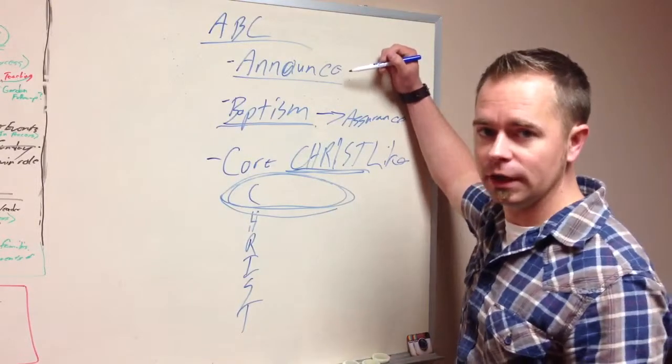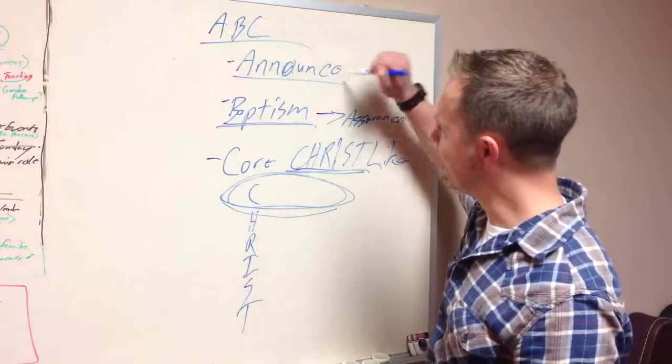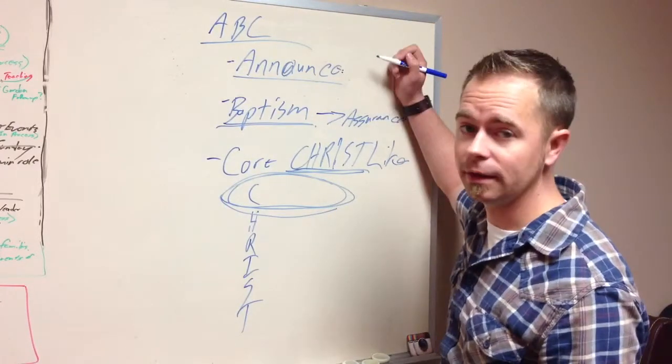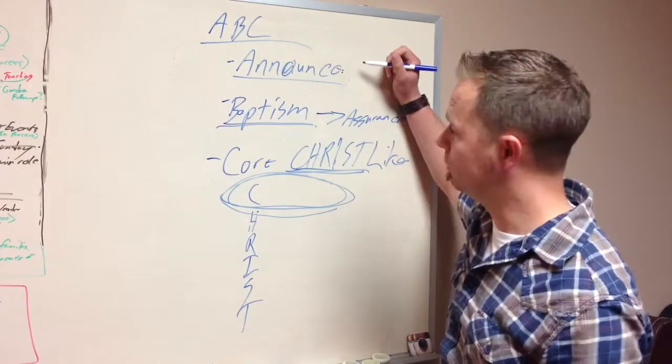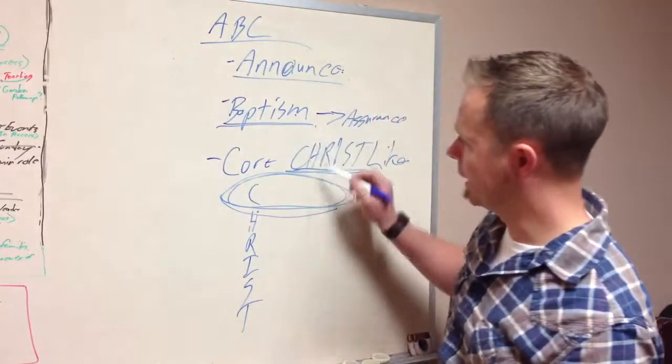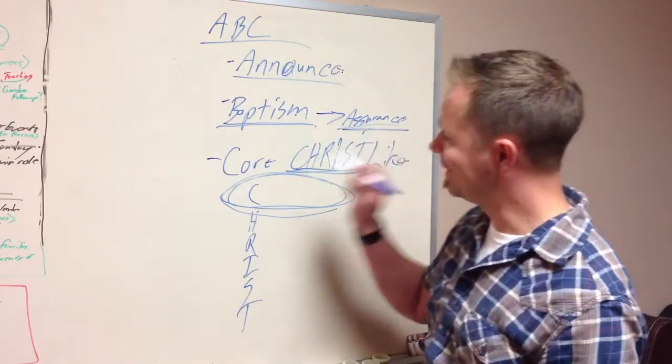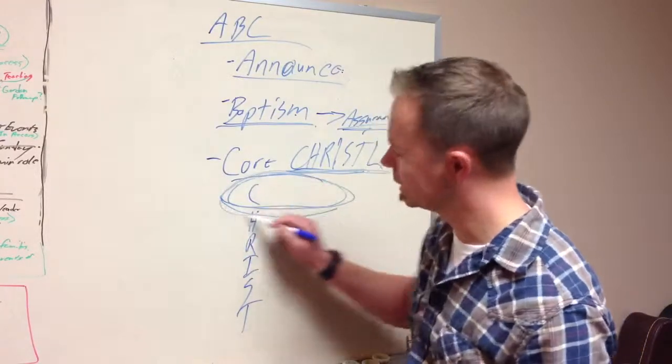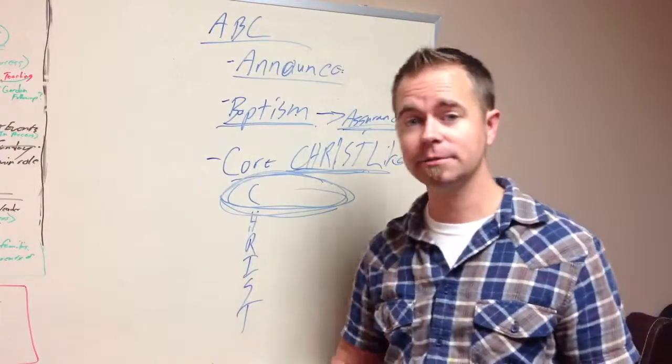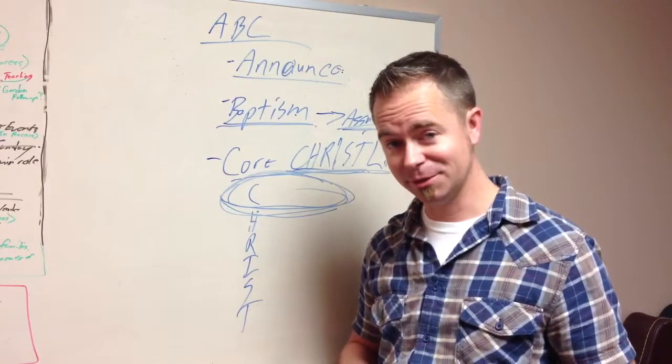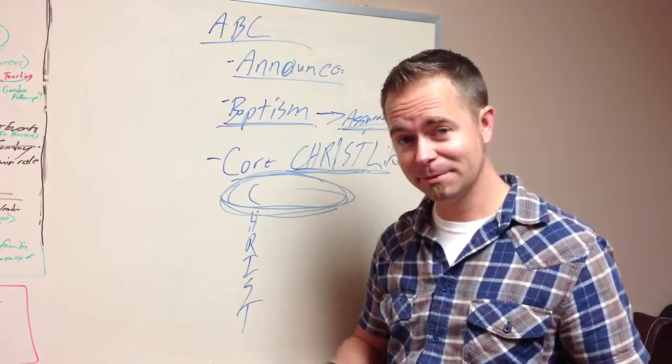When you have a new believer in your life group, make sure that they've announced to their non-believing friends and to their believing friends what God has done in them. Because they have a wonderful, narrow window of evangelism. Encourage them to get baptized for God's glory, for the encouragement of the church, and for their own assurance. And then also, work on the core Christ-like characteristics, especially connected to God through the word and prayer. It's going to be awesome. I am so excited to see these people becoming like Christ. So excited about the evangelism you're doing. Have a great summer and keep up the good work.